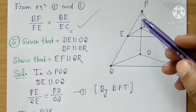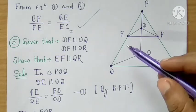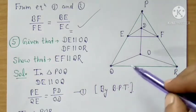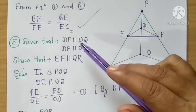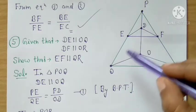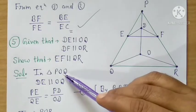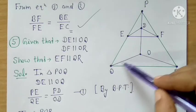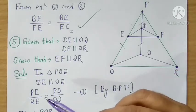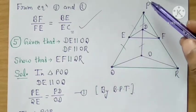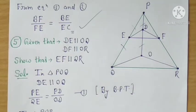In question 5, two lines are given as parallel. Prove that EF is parallel to QR. First, DE is parallel to OQ. This falls in triangle POQ. So by BPT, PE upon QE equals PD upon OD — equation 1. Similarly, DF is parallel to OR, which falls in triangle POR. So by BPT, PF upon FR equals PD upon OD — equation 2.